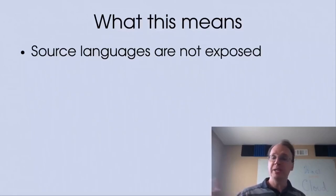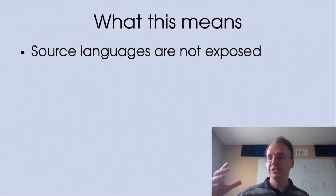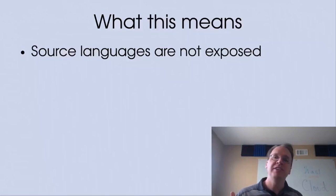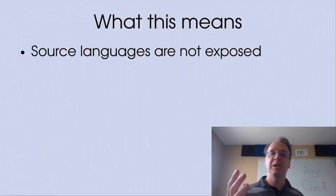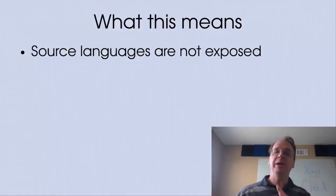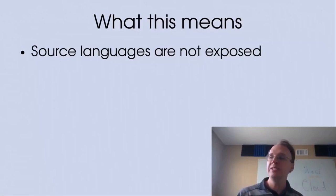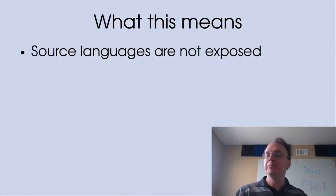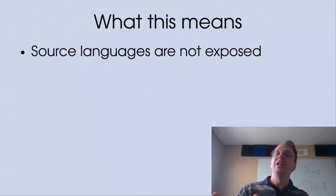These types give us source languages that are not exposed. If you have an API that takes a list of strings and returns a list of U8, nothing in the API says it was implemented in C++, or JavaScript, or Python. It's just a list of strings and a list of U8s. These types are source-language-independent. This means the ecosystem doesn't have to worry about fragmentation along API boundaries — at any given boundary, it won't matter what source language you're using; you can talk to any other language.